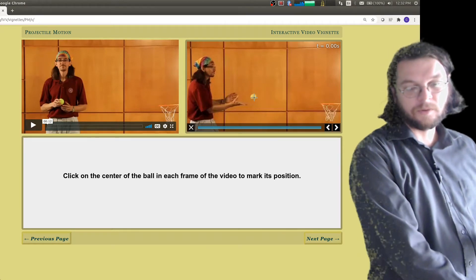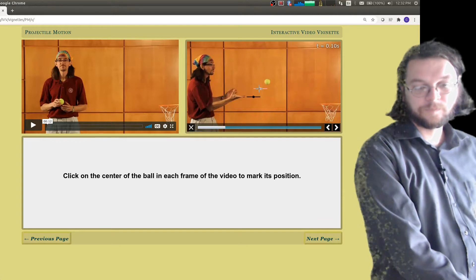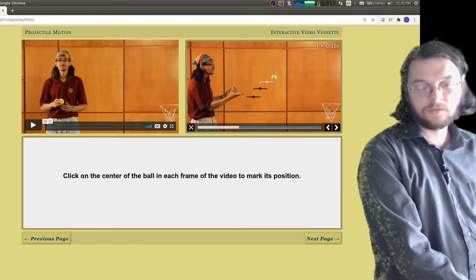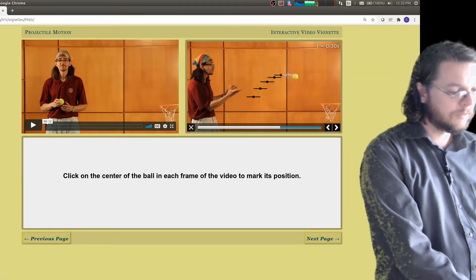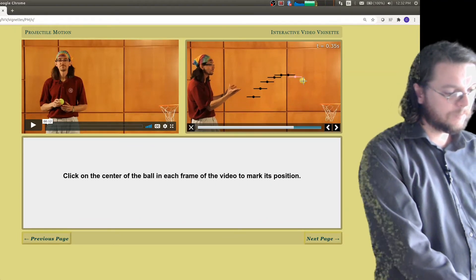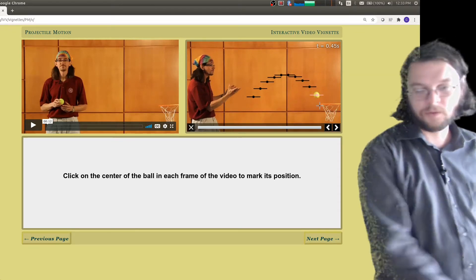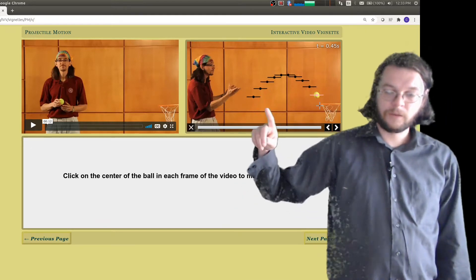You know, in the same amount of time, the ball is moving this distance in x, and also the same distance in x, even as it's all the way over here. And so from this, we conclude that the horizontal speed is not changing. Maybe you already knew that, that's fine. Now in this part, we're going to click the ball and it's going to give us a line this way.